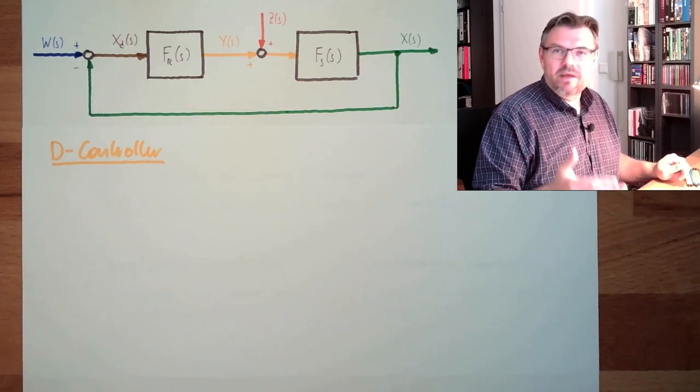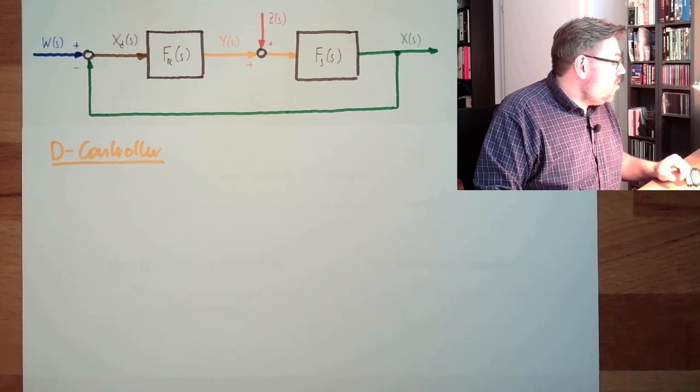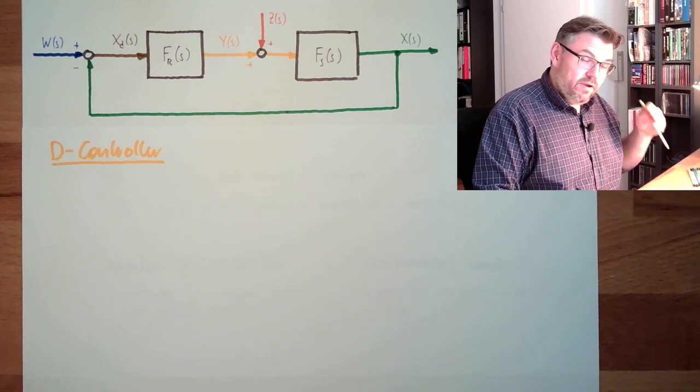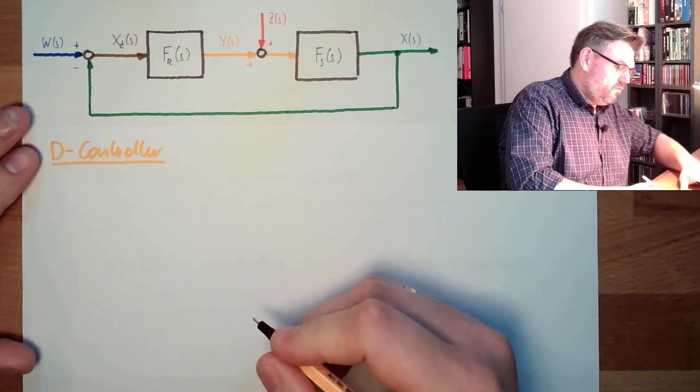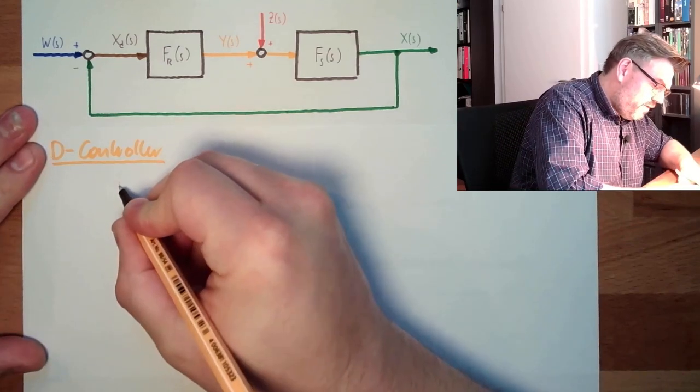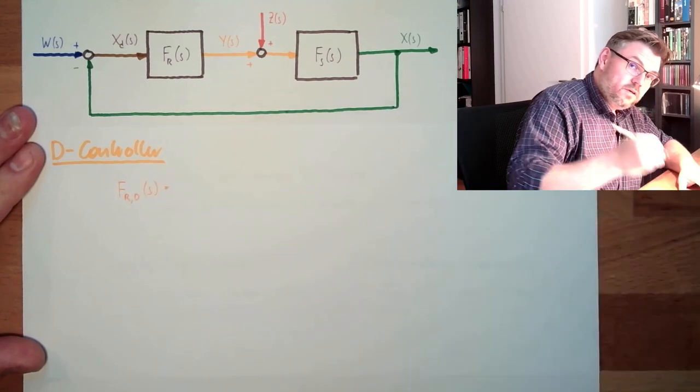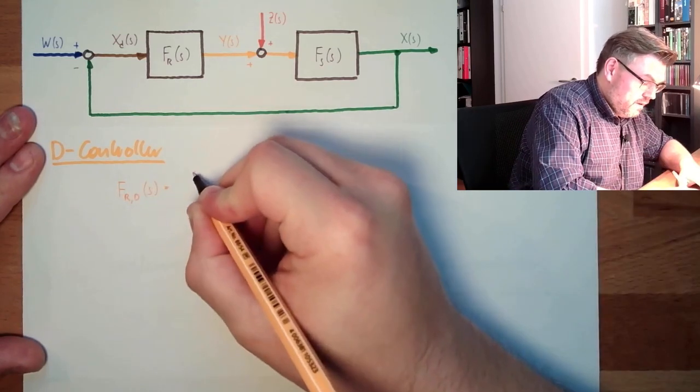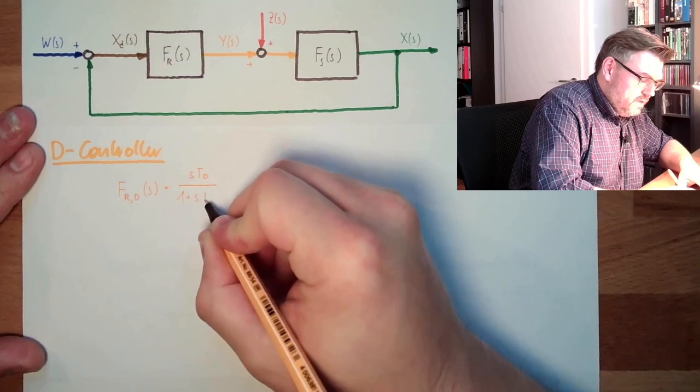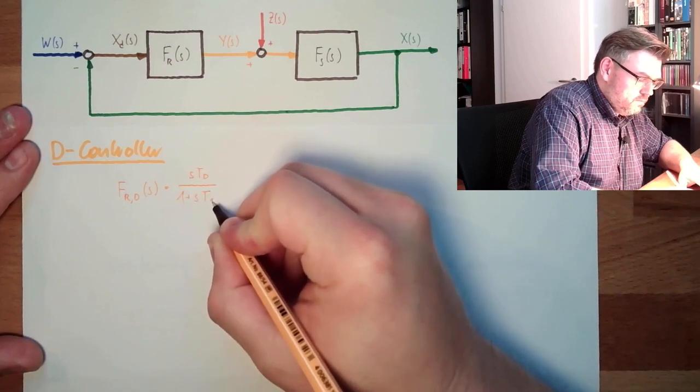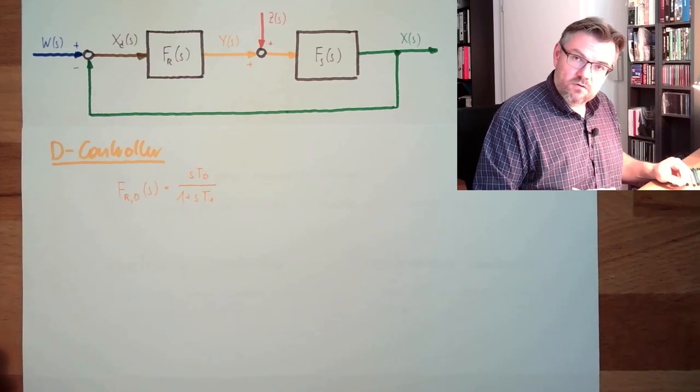I once said a D-element is pretty theoretical and doesn't exist in practice. So we are not using the transfer function of the D-element. We are using the transfer function of a DT1 element. The transfer function of a D-regulator is the transfer function of the DT1 element, which is S times T_D divided by 1 plus S times T_1. This is the transfer function of a D-controller.